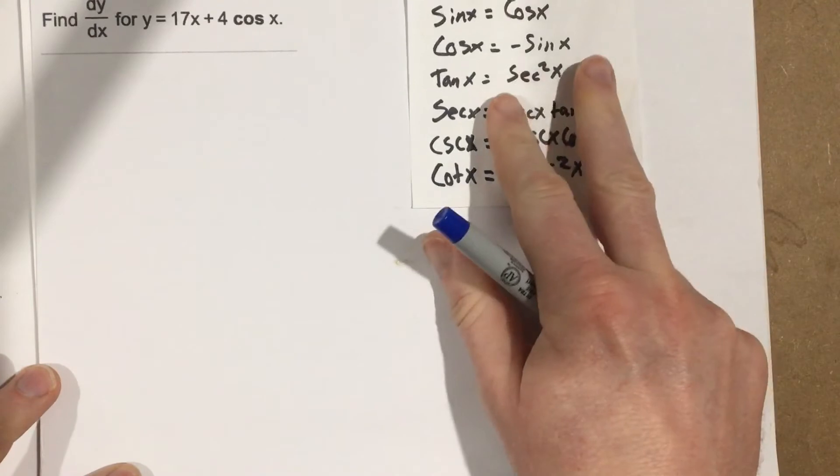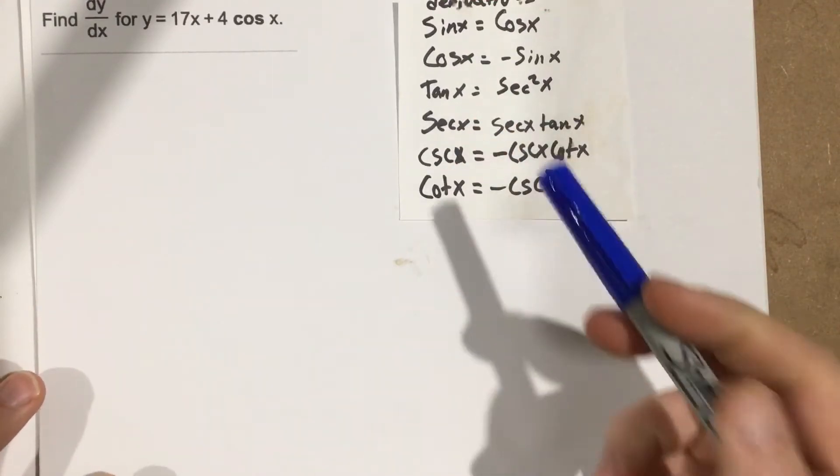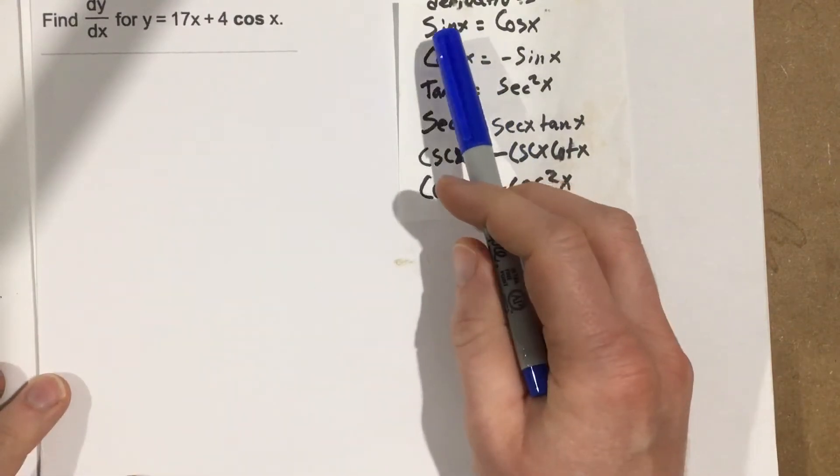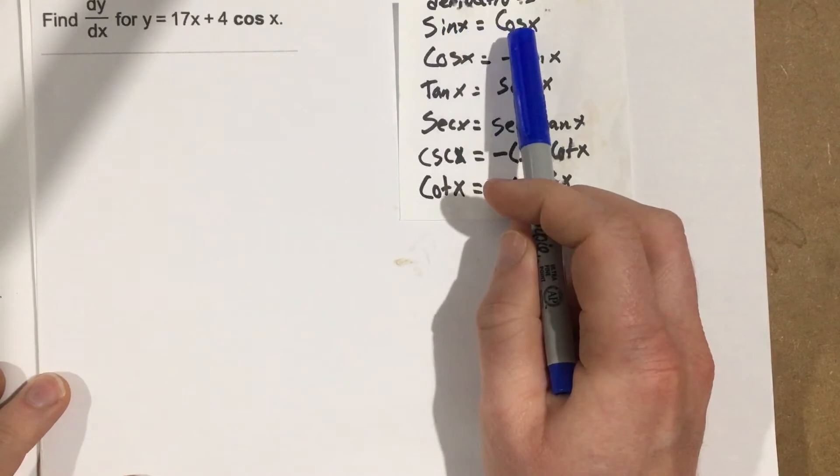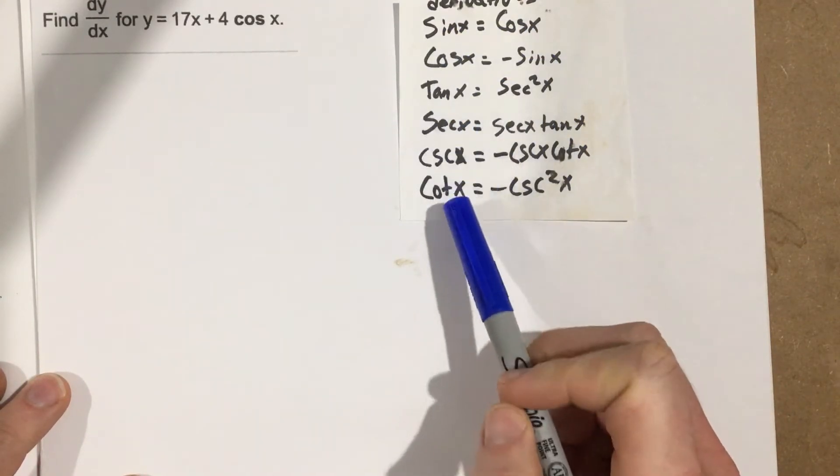So there's a specific derivative for each trig function. For the derivative of sine x we end up with cosine x, and the derivative of cosine x we get negative sine x, and so on and so forth down the list.